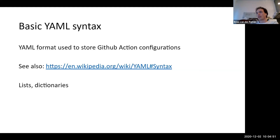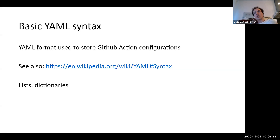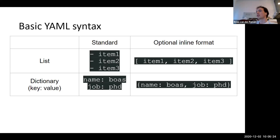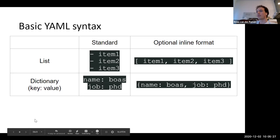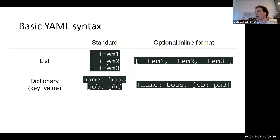Before we go into depth about GitHub Actions itself, I'm going to talk a bit about YAML. The Wikipedia entry for this format is pretty good, so if you have any doubts, check there. It's an easy format to declare lists and dictionaries and is useful for configuration files. You can define lists in two different ways: the standard way is just a dash and space followed by items, each on a new line. You can also do it inline, which looks more like the Python way of declaring a list.